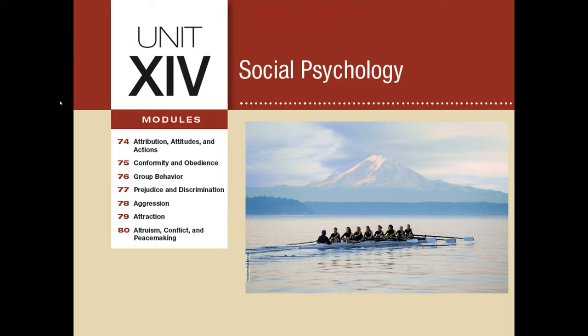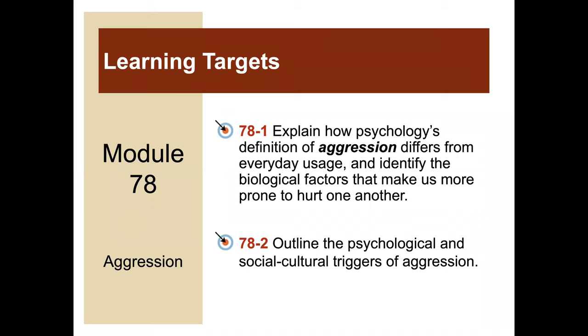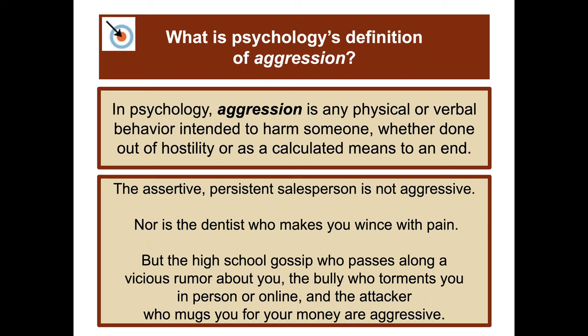Welcome to unit 14, social psychology, module 78: aggression. These slides align with Meyer's Psychology for the AP Course, third edition textbook. The learning targets are to explain how psychology's definition of aggression differs from everyday usage, identify the biological factors that make us more prone to hurt one another, and outline the psychological and sociocultural triggers of aggression.